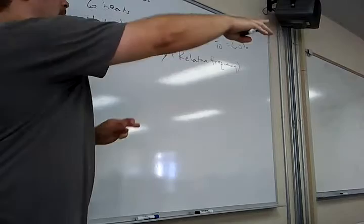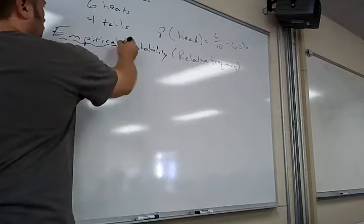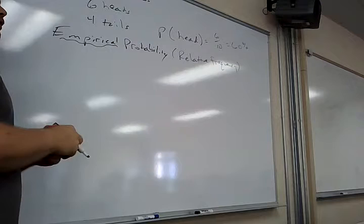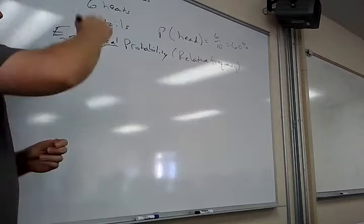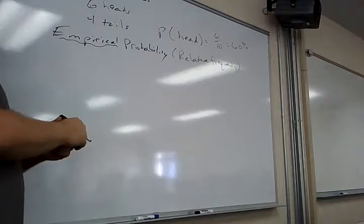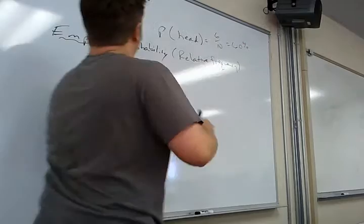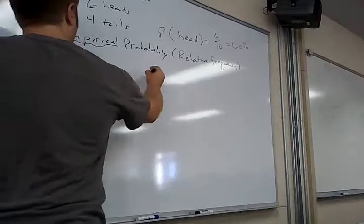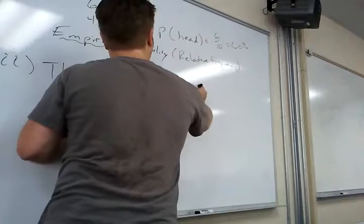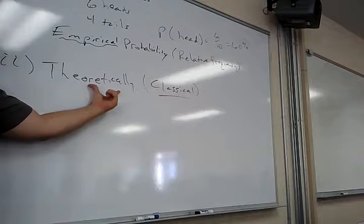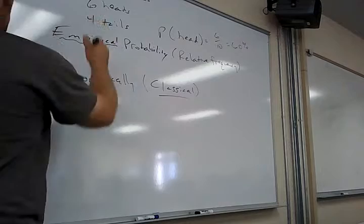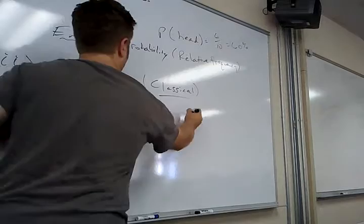The book calls it the relative frequency probability — how frequently did heads happen? Six out of ten. Empirical really means based on observations. That's where the empirical rule came from — they observed millions of normal distributions and said this is always happening, let's make a rule. Now, tell me theoretically: what would the probability of a head be theoretically? 50% or 0.5.